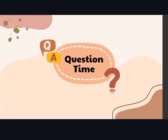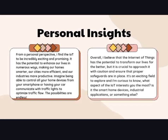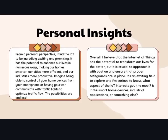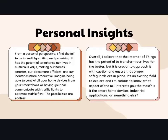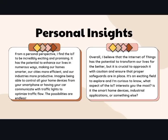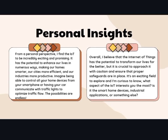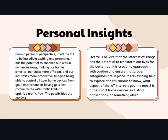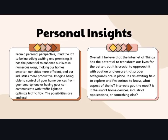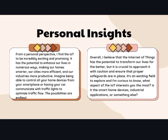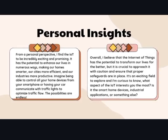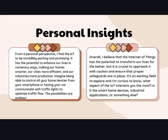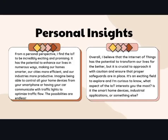From a personal perspective, I find the IoT to be incredibly exciting and promising. It has the potential to enhance our lives in numerous ways — making our homes smarter, our cities more efficient, and our industries more productive. Imagine being able to control all your home devices from your smartphone, or having your car communicate with traffic lights to optimize traffic flow. The possibilities are endless. The Internet of Things has the potential to transform our lives for the better, but it is crucial to approach it with caution and ensure that proper safeguards are in place. I'm curious to know what aspect of the Internet of Things interests you the most — is it smart home devices, industrial applications, or something else?